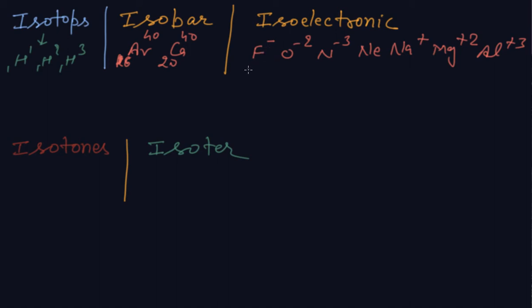If you see that in the whole they are getting 10. Oxygen 8 to 10, nitrogen 7, 3 is 10, neon already 10. Sodium 11 minus 1 because it is plus, losing one electron, so 10, 10, and 10.